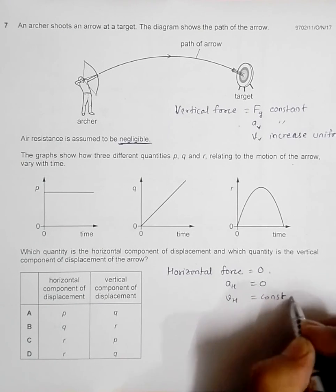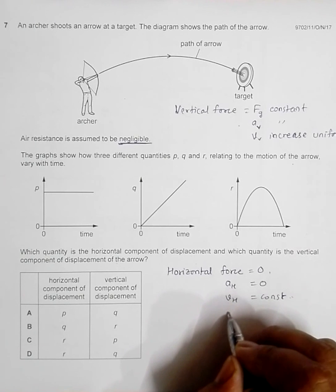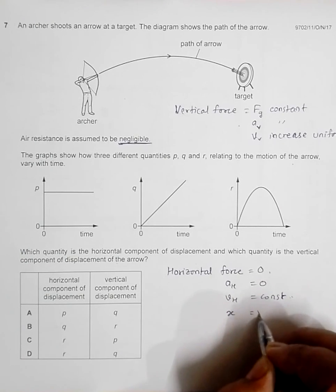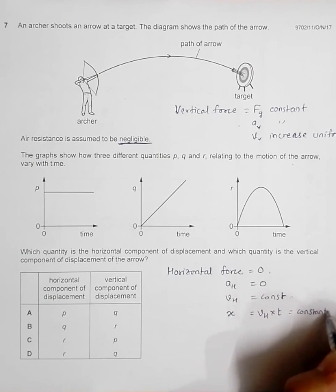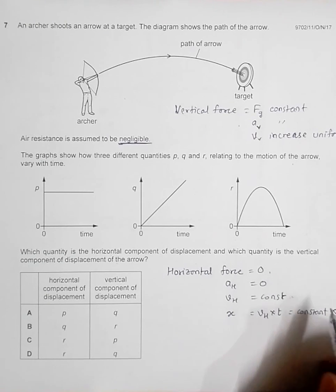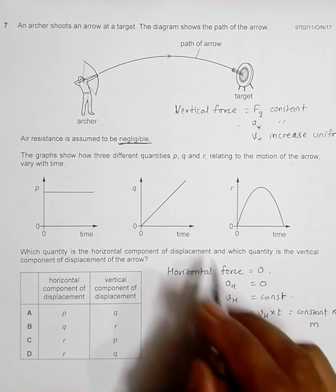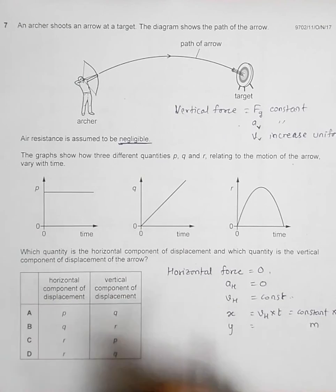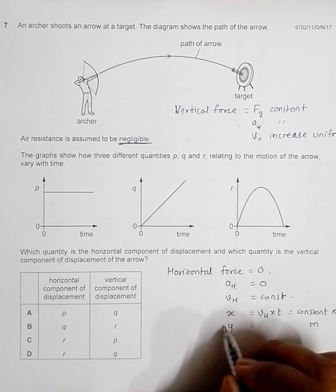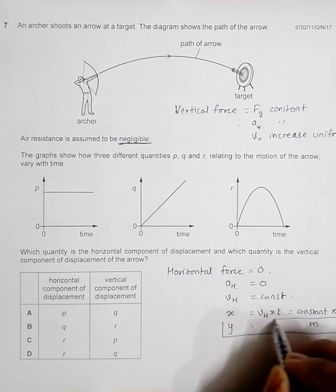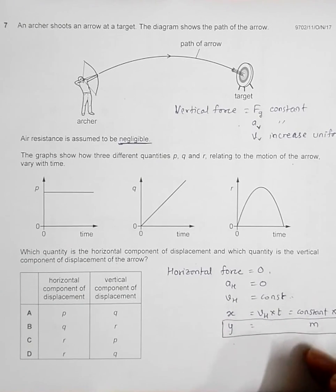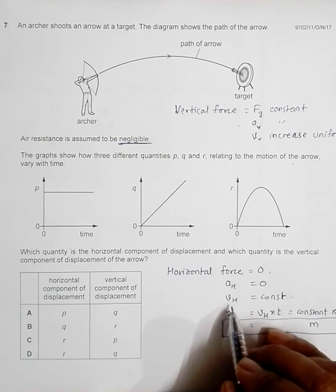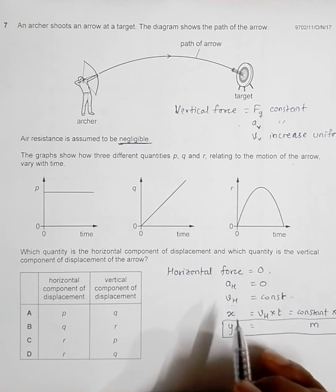Now the displacement, which we call X, equals V horizontal times time, so it's constant times time. This equation resembles Y equals M times X, where T is on the X axis and displacement is on the Y axis. This should form a graph which is a straight line passing through the origin, so Q should be the horizontal component of displacement.